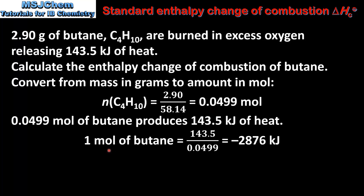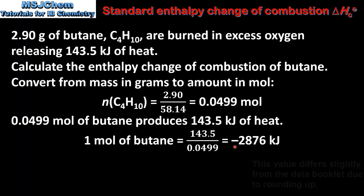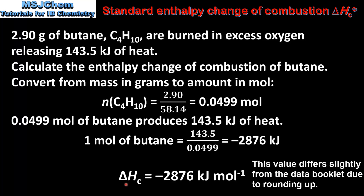To find the enthalpy change for 1 mole of butane we divide the heat released by the amount in moles of butane. This gives us negative 2876 kilojoules. Note the use of the negative sign because the reaction is exothermic, which means heat is released. So the enthalpy change of combustion of butane is negative 2876 kilojoules per mole.